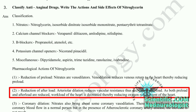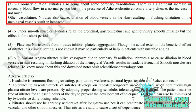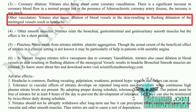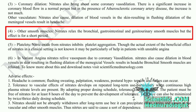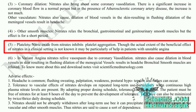Third pharmacological action of nitroglycerin is coronary dilation — nitrates bring about coronary vasodilation with a significant increase in coronary blood flow in normal persons, but in the presence of atherosclerotic coronary artery disease, the increase is not as much. Other vascular effects: nitrates also cause dilation of blood vessels in the skin resulting in flushing, and dilation of meningeal vessels results in headache. Other pharmacological actions on smooth muscles include relaxation of bronchial, gastrointestinal, and other smooth muscles, but the effect is short-lived. Regarding platelets, nitric oxide from nitrates inhibits platelet aggregation, which may be particularly helpful in patients with unstable angina.